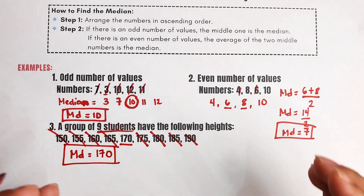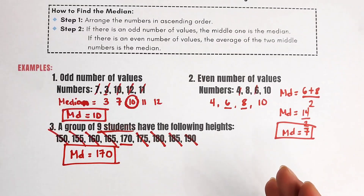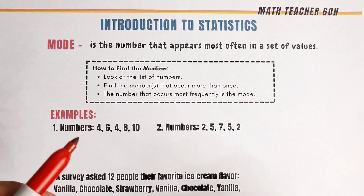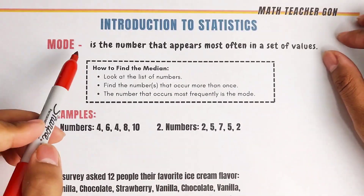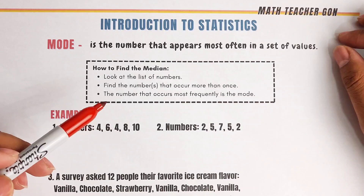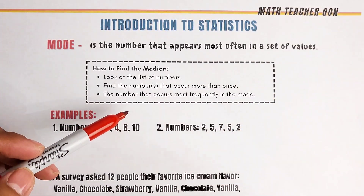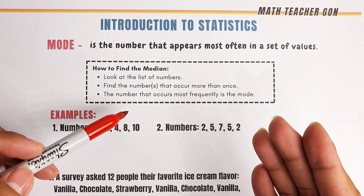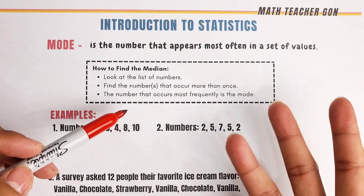So right now we are done with the mean and median, and in the next part of the video we will talk about the mode. As for the mode, the definition is that mode is the number that appears most often in a set of values. When we say mode, it is more about the frequency that a number or value appears.